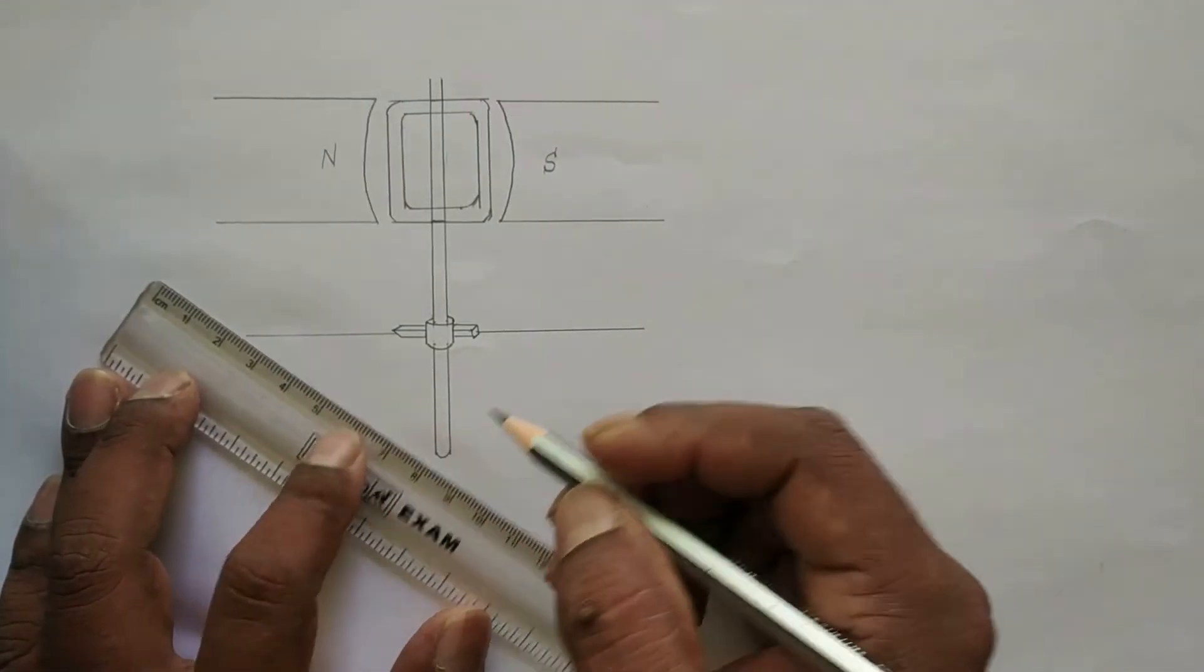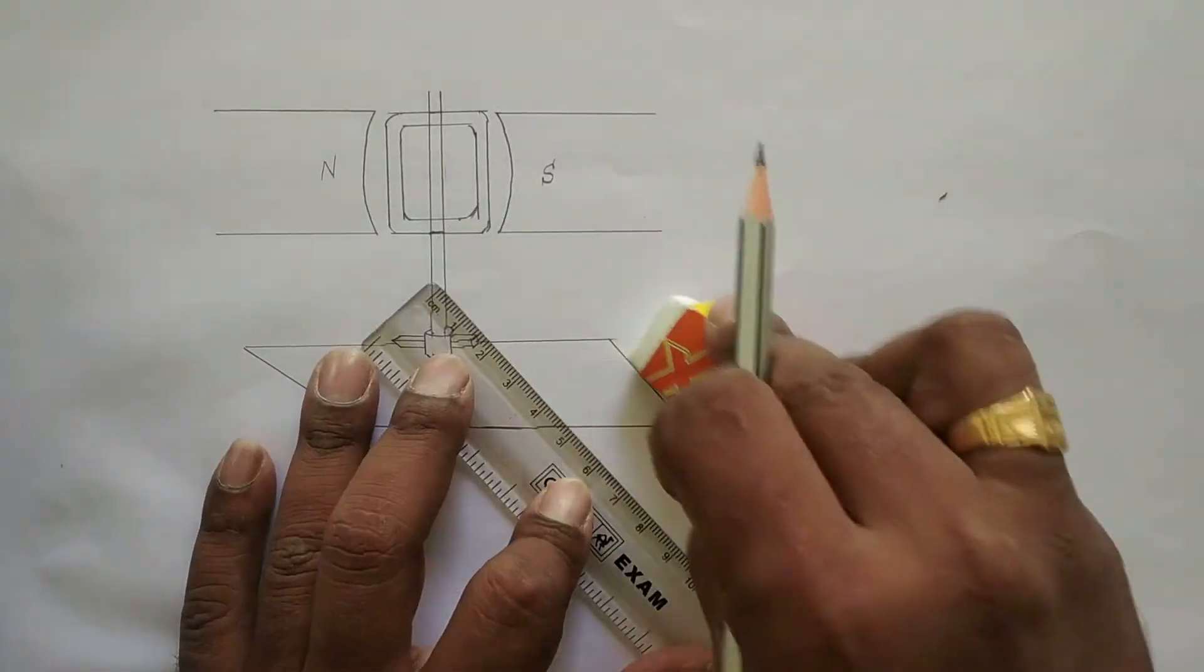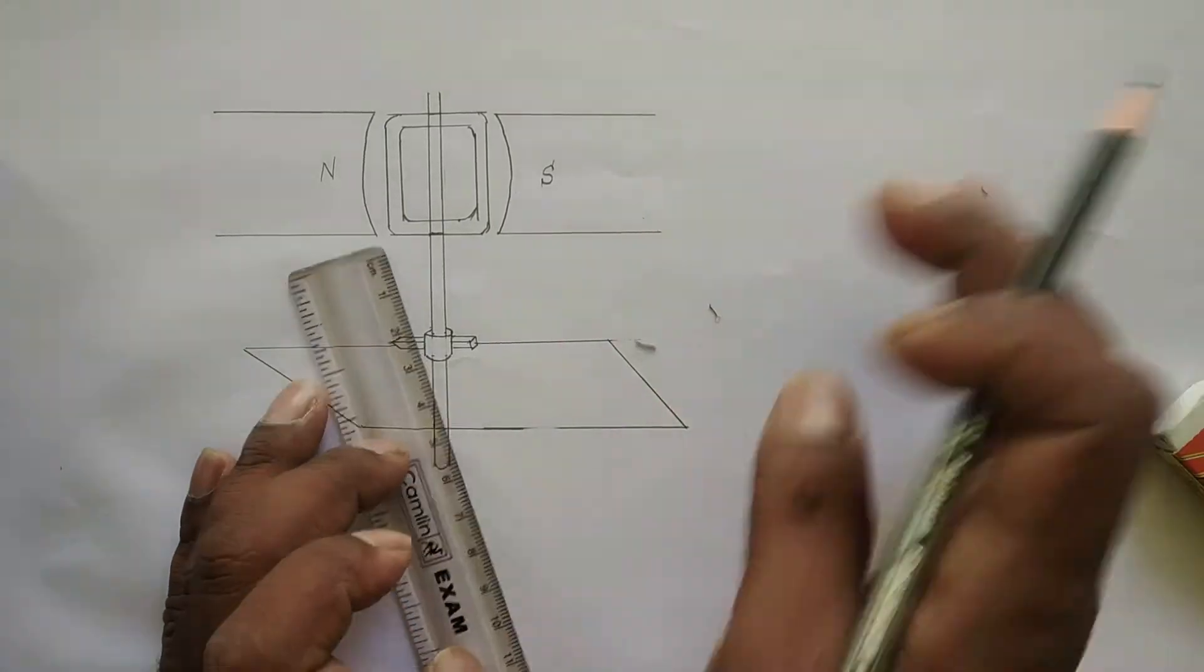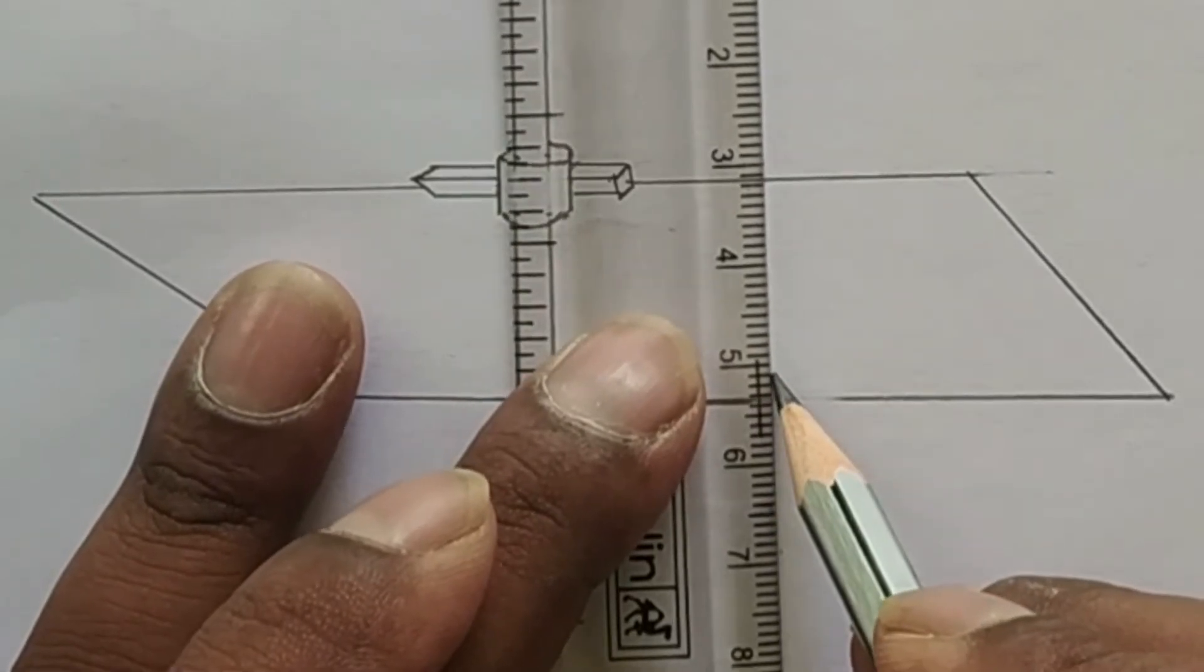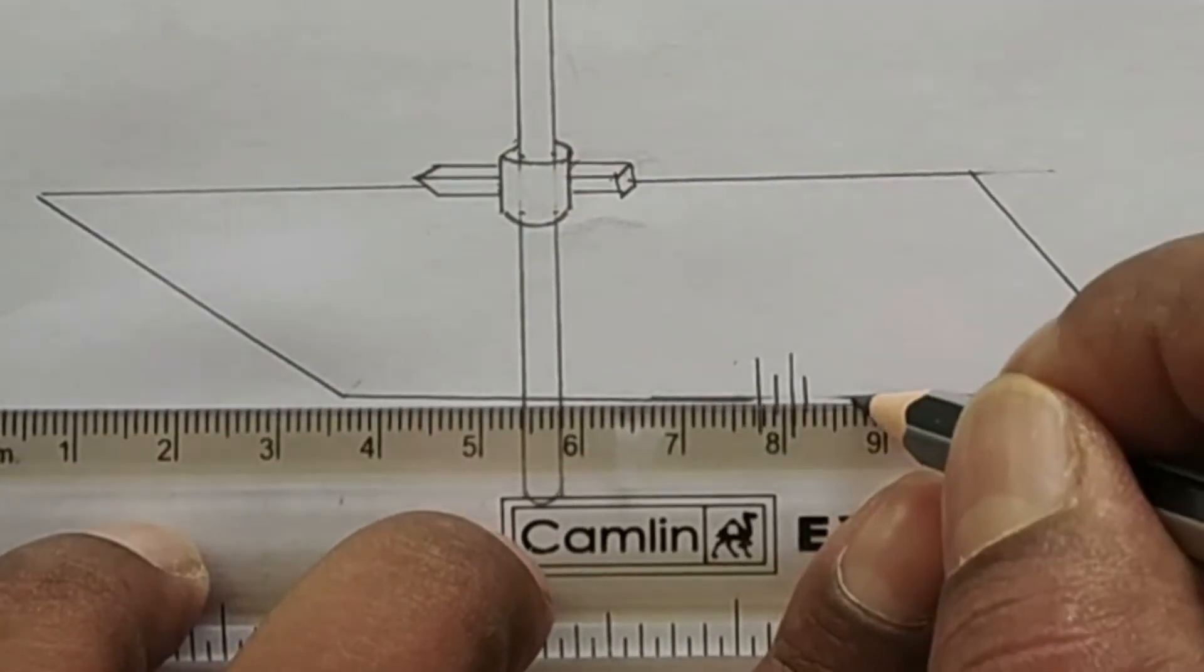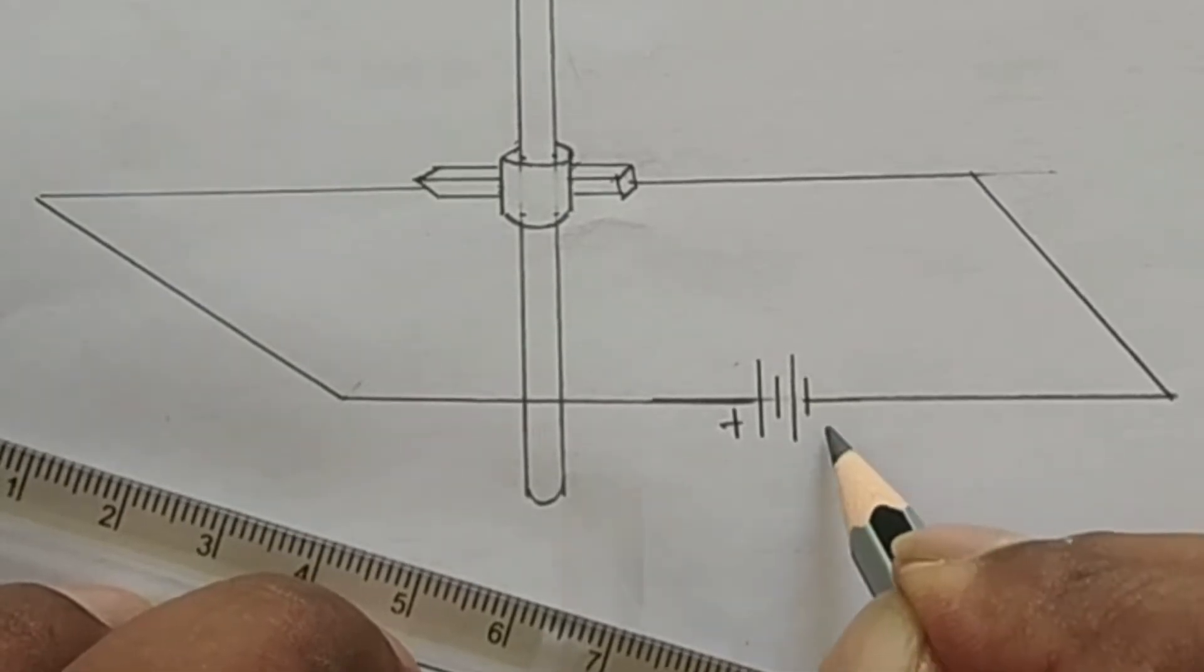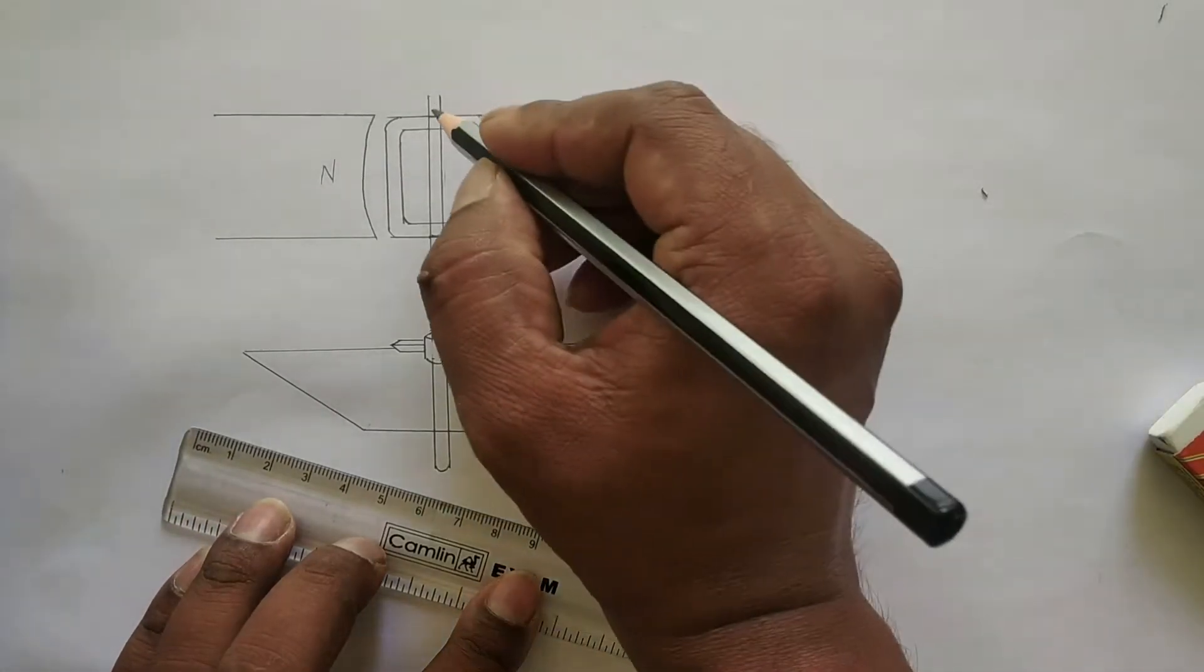Complete this. You have to draw the battery - longer line and a shorter line, longer line and a shorter line. The longer line indicates positive terminal of the battery, shorter line indicates negative terminal of the battery.